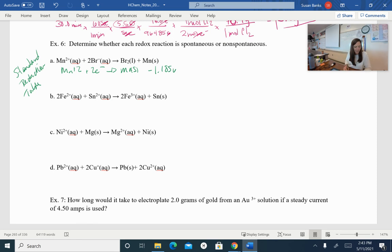And if I look up two bromides going to bromine and two electrons, I get a voltage of negative 1.066 volts. So I'm going to add those two up because one is oxidation, one is reduction. So I get a grand total of negative 2.251 volts. That being negative tells me that this is non-spontaneous.